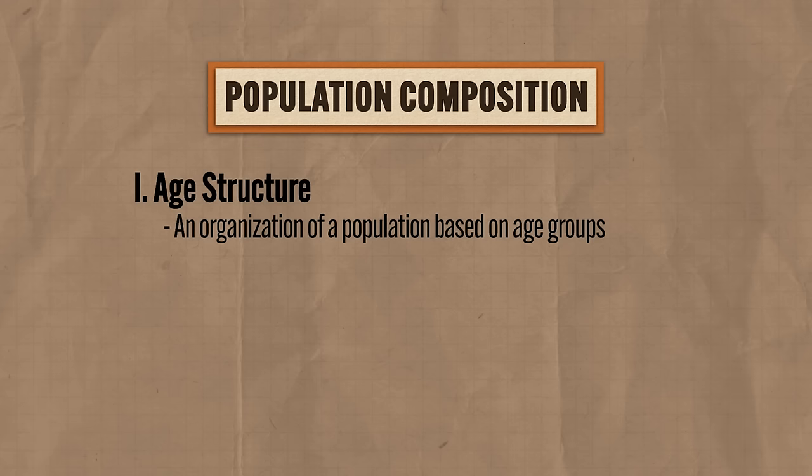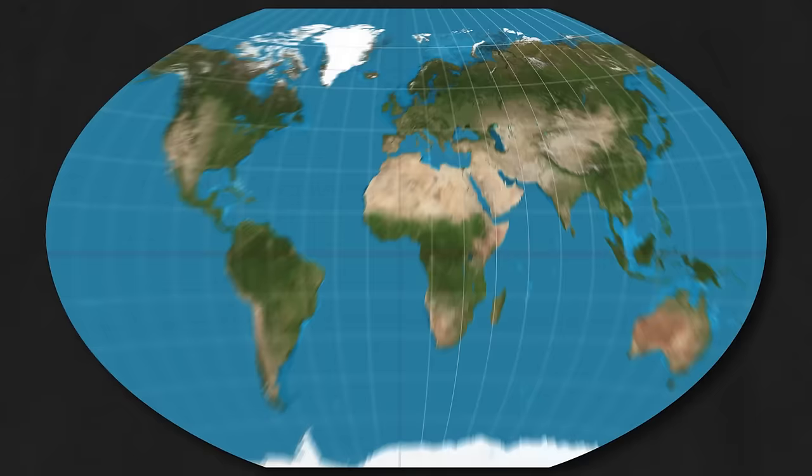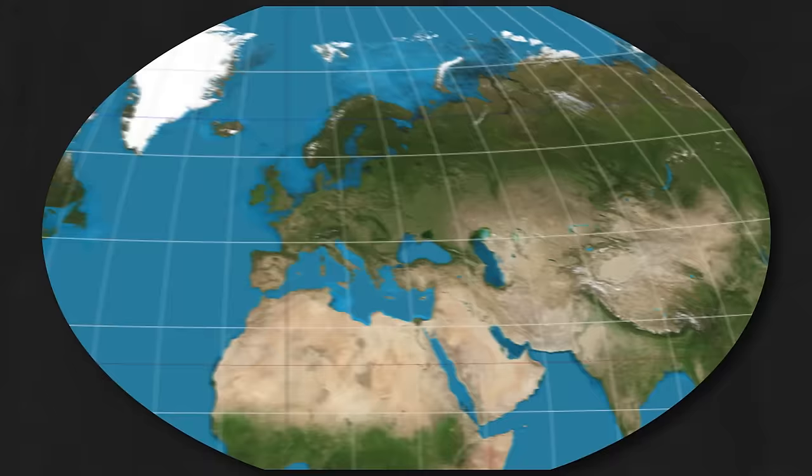The second element of population composition is the sex ratio, which represents a comparison of males to females in a population. Depending on the scale used, the sex ratio can be different. On a global scale it's about 101 men to 100 women. Zoom into Europe and the ratio is 95 to 100. Zoom into China and it's 110 to 100, which is a result of their one-child policy — but we'll talk about that later.